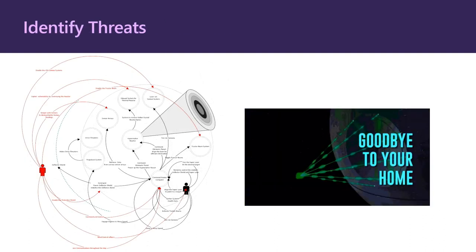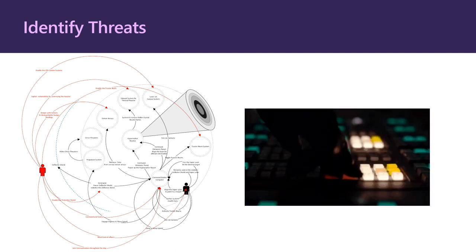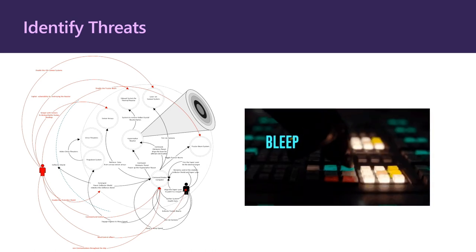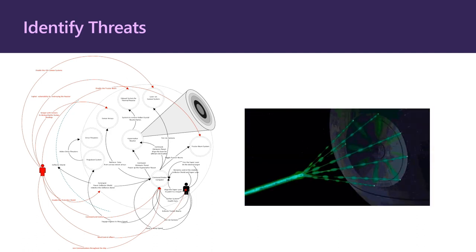Now that we have our data flow diagram, let's look at the quick and dirty attack tree. An attack tree goes through all the scenarios an attacker would use to reach their goal of compromising something within the system. Using the STRIDE framework, some possible threats within the Death Star include disabling the ion cannon systems, tampering with the tractor beam, mind controlling people to access the battle station computer — if you're a Jedi — jamming communications, and sending signals. As we all know from the Star Wars movies, the security is not that great. They should have had someone threat model this thing a long time ago.